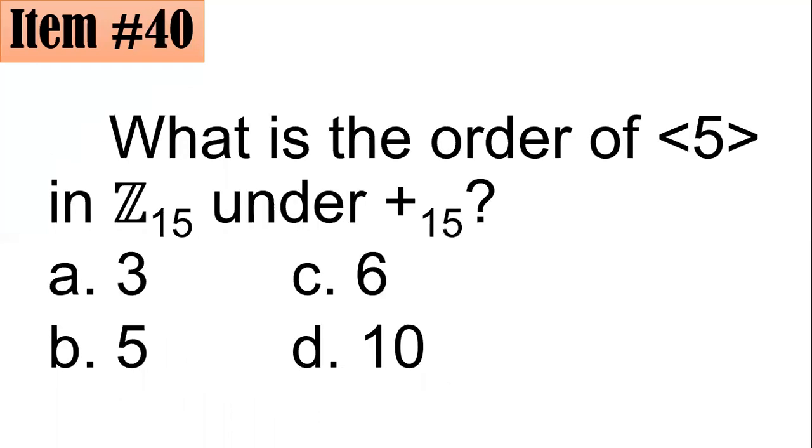Number 40. What is the order of 5, of the element 5, in Z₁₅ under addition modulo 15? So Z₁₅, it's all the remainders upon division by 15, like 0, 1, 2, 3, until 14. Take note that remainders are whole numbers less than your divisor. So what's the order of 5? So if you operate 5 to itself, addition modulo 15, how many elements can it generate in all only? Is it 3, 5, 6, or 10?